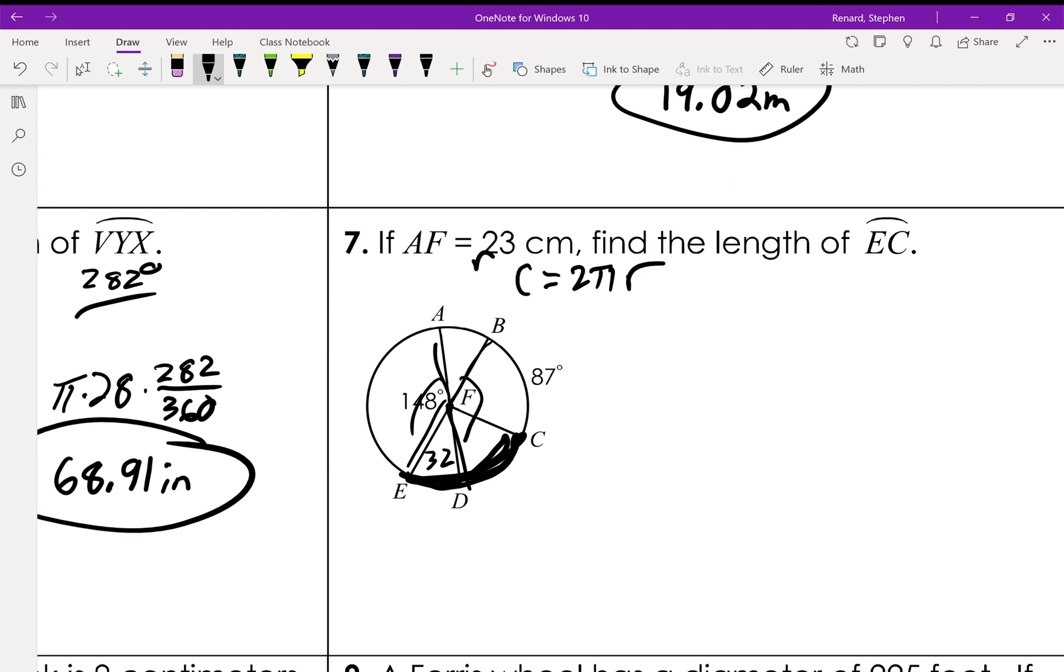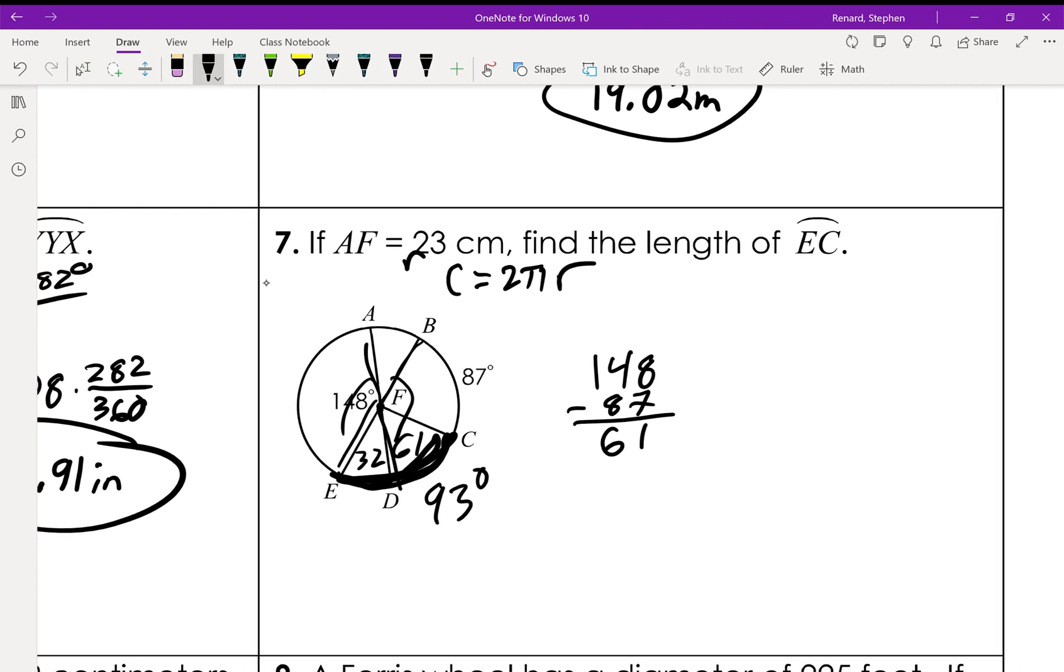So since we know that B to F to D is 148 degrees, and that B to F to C is 87, we can go 148 minus 87 and we get 61 degrees. So that's 61, 32, 93 degrees. Drop it into the equation we've been using: 2 times π times 23 centimeters. That's our total circumference. And this right here, this is the portion of the circle we're talking about. 2 times 23 times 93 divided by 360 equals 37.332, so 37.33 centimeters.